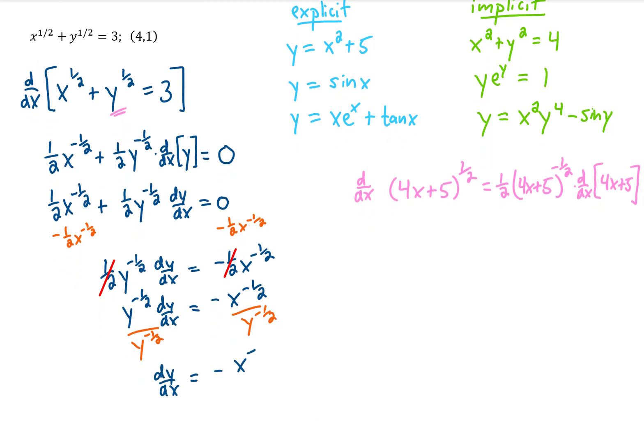And on the other side, we end up with negative x to the negative 1/2 over y to the negative 1/2. Well, the form of this equation makes me feel a little bit sick because we have a numerator and a denominator and each has a negative exponent on it. So let's rewrite this a bit. Okay, that looks better. Now we have our derivative.